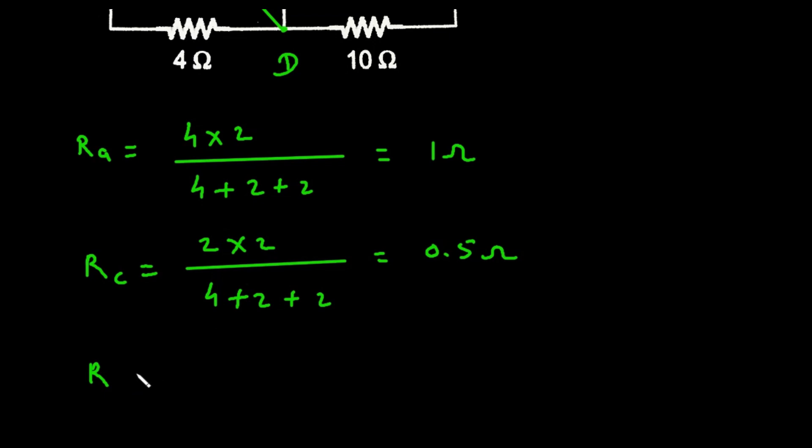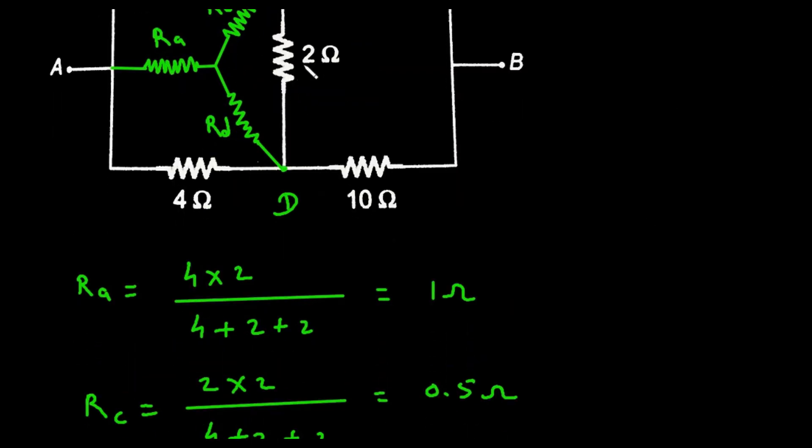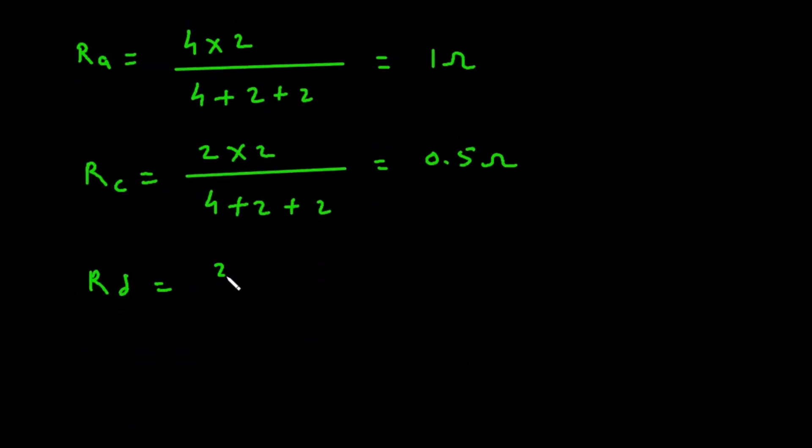Then finally R D. So here R D will be 2 into 4. So again 2 multiplied with 4 divided by same denominator 4 plus 2 plus 2. So here this is same that means we get 1 ohm.